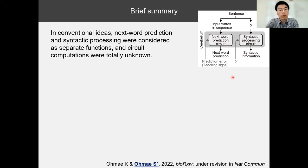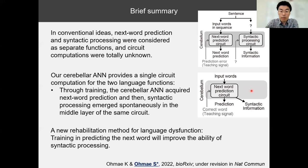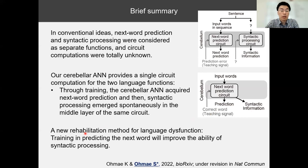In conventional ideas, next-word prediction and syntactic processing were considered as separate functions, and their circuit computations were totally unknown. However, our ANN provides a single circuit computation for two language functions. Through training, the ANN acquired next-word prediction, and syntactic processing emerged spontaneously in the middle layer of the same circuit. This single circuit computation for two language functions leads us to a new rehabilitation method for language dysfunction, in which training in predicting the next word will improve the ability of syntactic processing.